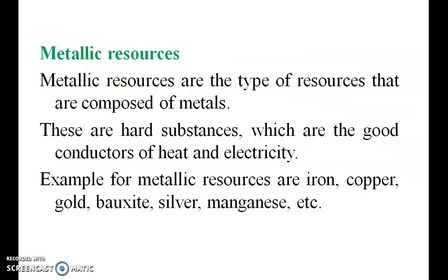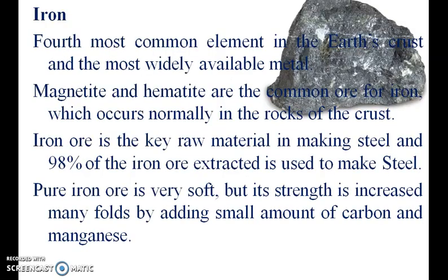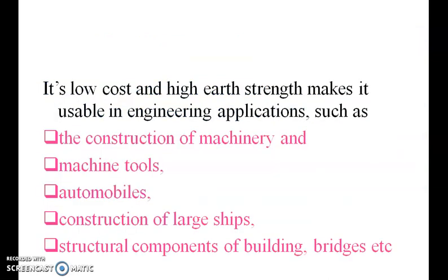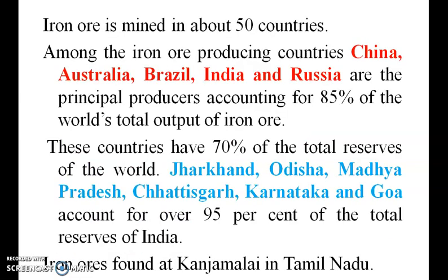Metallic resources are resources that are composed of metals. Examples: copper, iron, gold, etc. Iron is the fourth most common element in the earth and the most widely available metal. Magnetite and hematite are the common ores of iron. Iron ore is the key raw material in making steel and 90% of iron ore is used to make steel. It is used in the construction of machinery, machine tools, automobiles, large ships, and structural components of buildings and bridges. Iron ore is mined in about 50 countries.